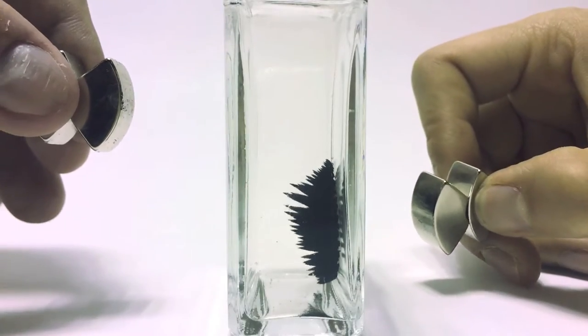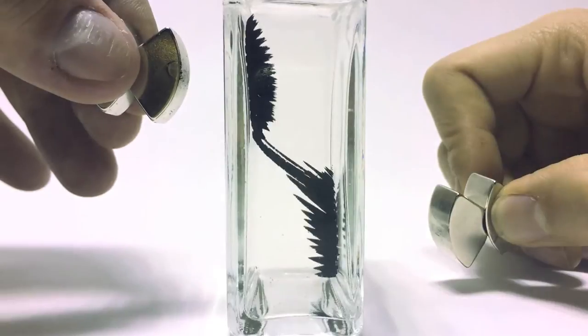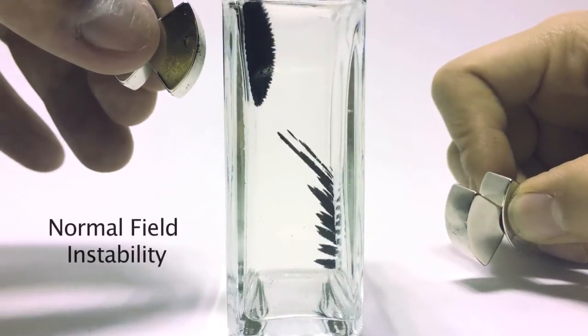The fluid surface forms a regular pattern of peaks and valleys in an effect known as the normal field instability.